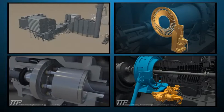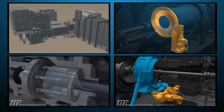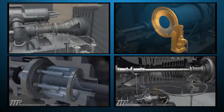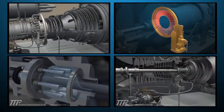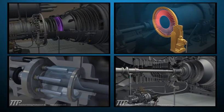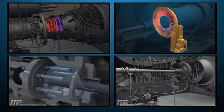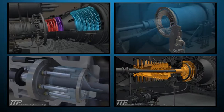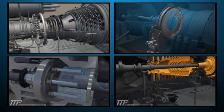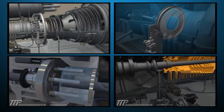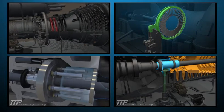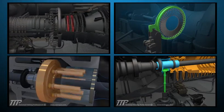The TTP LMS100 gas turbine course covers design, flow paths, function and operation of the different sections of the triple shaft aeroderivative gas turbine and generator. The LMS100 gas turbine is a unique aero-derivative machine that uses frame technology to increase its efficiency and output.